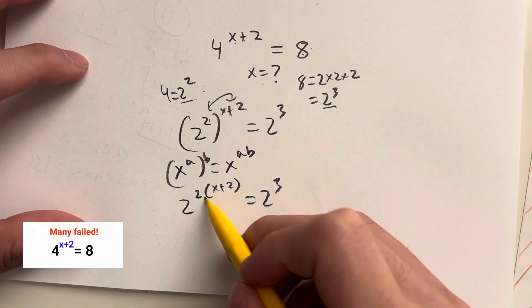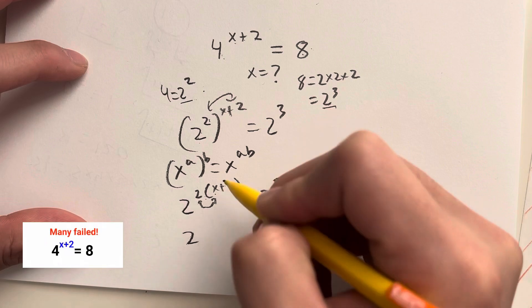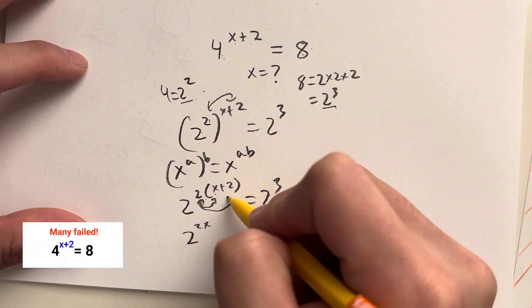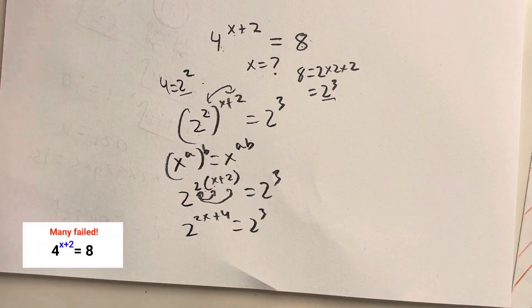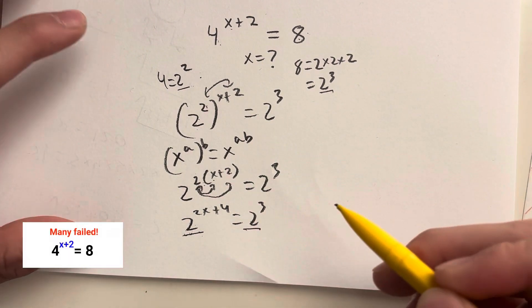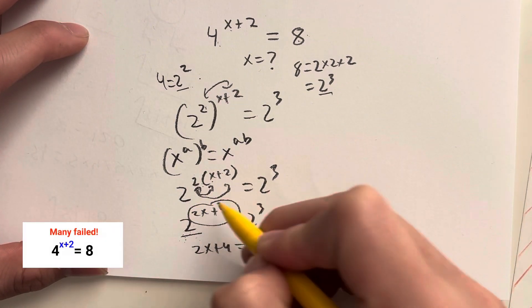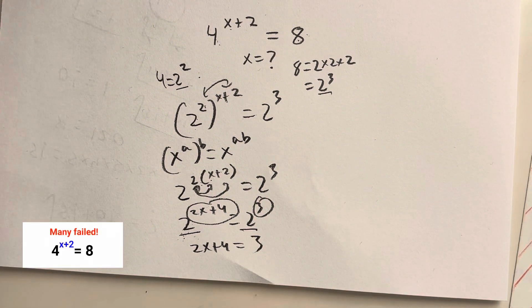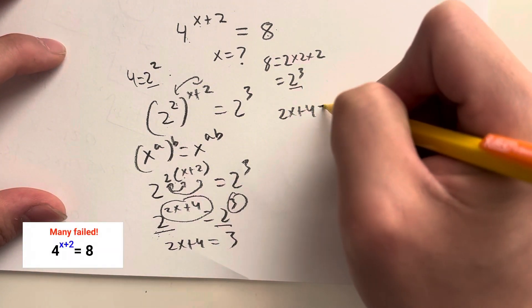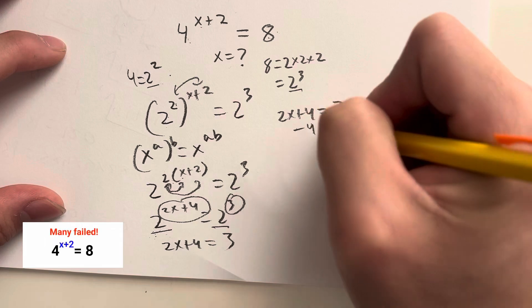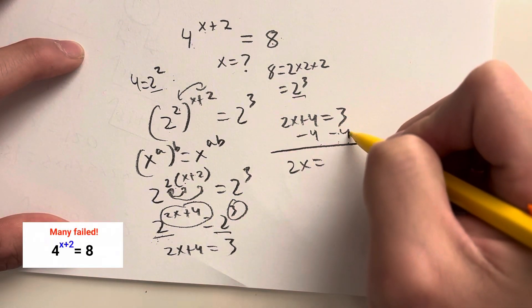And then what do we do? We can kind of distribute the 2 into that. That gives us 2. 2 times x is 2x. 2 times 2 gives us plus 4. That's equal to 2 to the third. And now you can finally see our last steps, because once you have this and this, you get 2x plus 4 is equal to 3. We're just setting this exponent equal to this exponent. And then we just solve this pretty simple equation. So we have 2x plus 4 is equal to 3 minus 4 on both sides, just so I can get numbers and x's on one side. I get 2x is equal to 3 minus 4, which is equal to negative 1.